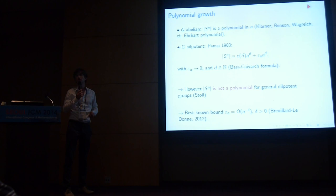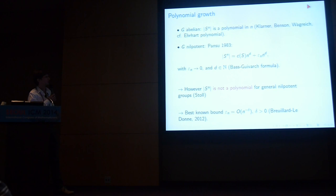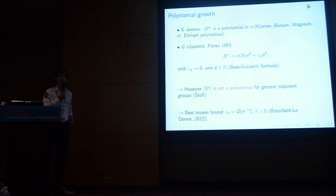S to the n is not polynomial in general — this was shown by Stoll. In fact, the generating power series of |S^n| may not be a rational function. However, there is recent work showing that in the Heisenberg case, it actually is rational.